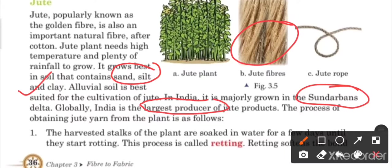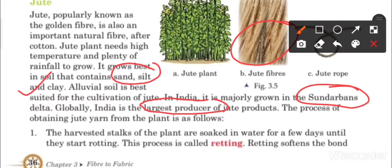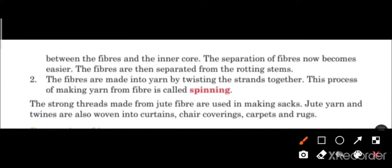The process of obtaining jute yarn from the plant is as follows. The harvested stalks of the plant are soaked in water for a few days until they start rotting. This process is called retting. Retting softens the bond between the fiber and the inner core.